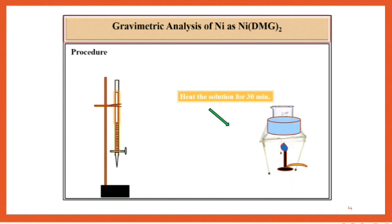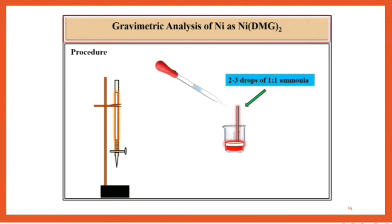Then allow the precipitate to settle down. Test the completion of the precipitation by adding few drops of 1:1 ammonia solution and DMG reagent to the supernatant solution. It should not give any precipitate. If it is giving then add little reagent solution till finally no precipitate is obtained.